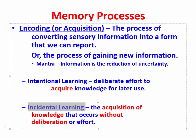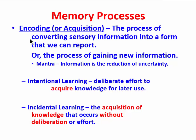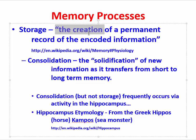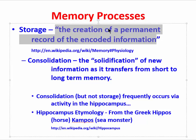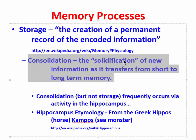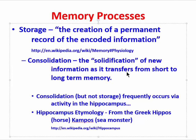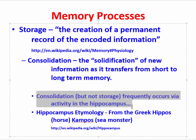Let's now move on to the next stage: storage. We can define this as the creation of a permanent record of the encoded information. Even if we had encoded something, it is possible that we just don't store it, and if we don't store it, we won't be able to retrieve it later on. This relates to the idea of consolidation — we have to solidify the new information to transfer it from short-to-long-term memory. In the last several decades, researchers have begun to understand the important role of the hippocampus in the consolidation process, and when the hippocampus becomes compromised, people typically have trouble with the storage stage.